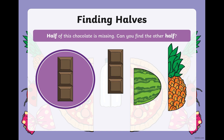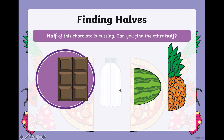Let us look at the chocolate. Half of this chocolate is missing. Can you find the other piece of the chocolate that looks the same as this piece over here, and is the same size? I don't think it's this one. Not this one. Yes, this is the one. Excellent. So when you put it together, it makes a whole.